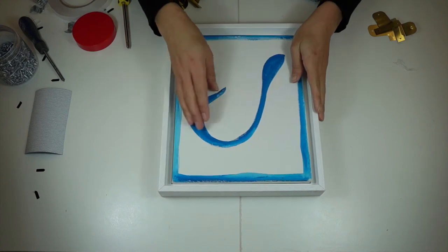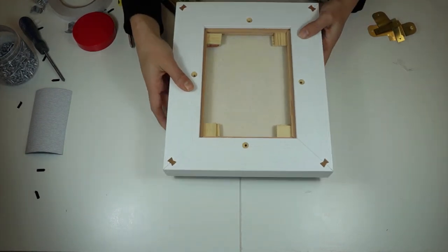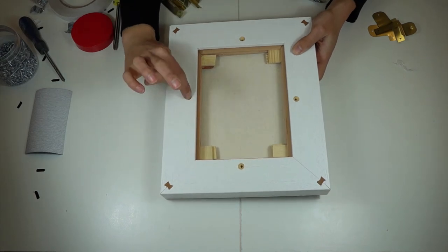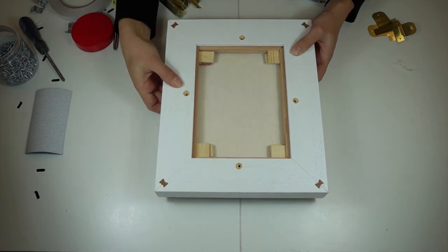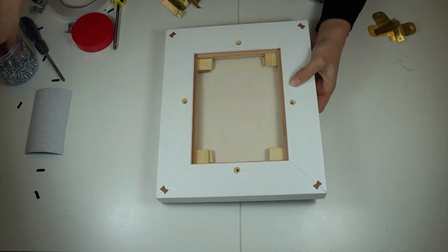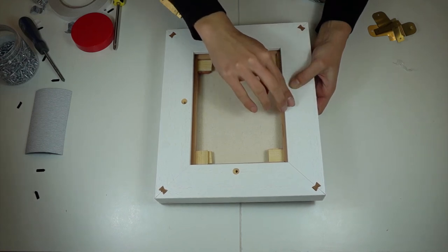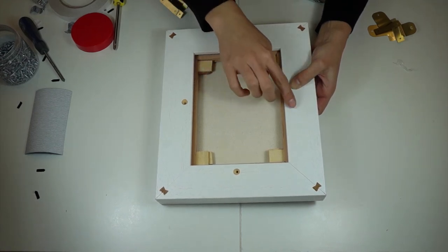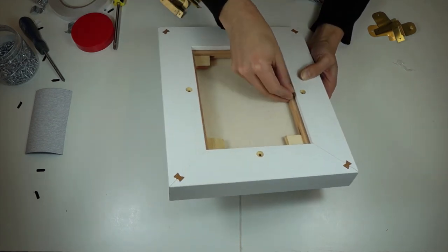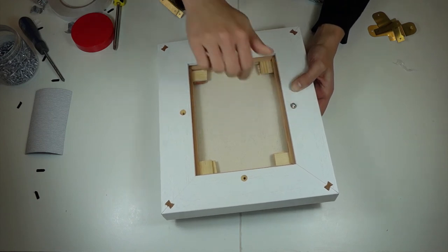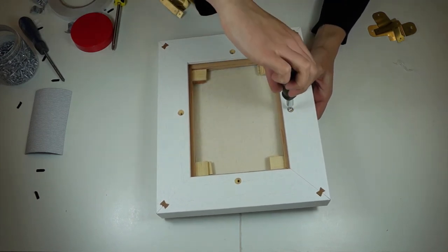So what you have to do instead of using flexi plates is actually drill holes. And these are holes that I've made earlier, little pilot holes. And you literally, all you have to do is get your screw and screw directly into the back of your canvas. Ensuring of course that your screw won't go through so that you see the tip of the screw at the front of your painting. And so you just screw them in like so.